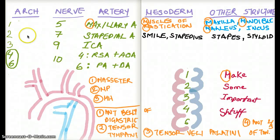So moving on to brachial arch 2. See how we thought the second one has to do with S. Make some important stuff. S for stapedial artery. I've put down S for smile. Well, actually, for brachial arch 2, the mesodermal structures are muscles of facial expression.